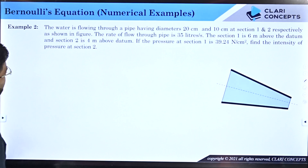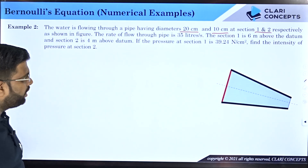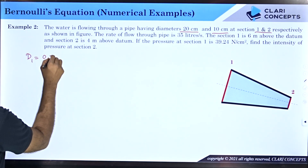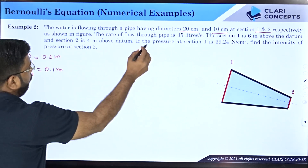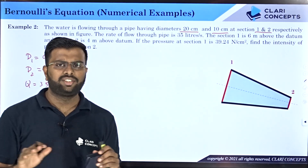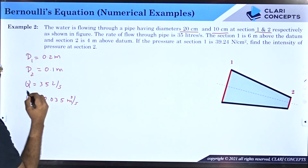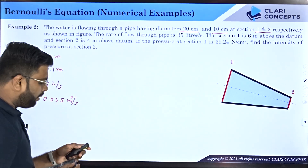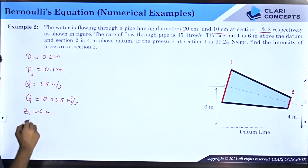Next example: water flows through a pipe having diameters 20 cm and 10 cm at sections 1 and 2 respectively. So D1 = 0.2 m and D2 = 0.1 m. The rate of flow is 35 liters per second, which converts to 0.035 m³/s. Section 1 is 6 meters above the datum line and section 2 is 4 meters above the datum line, so Z1 = 6 m and Z2 = 4 m.